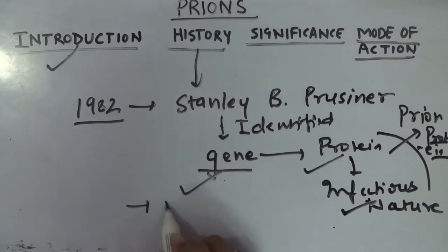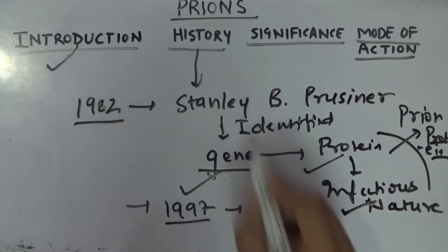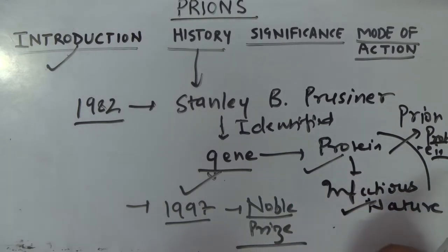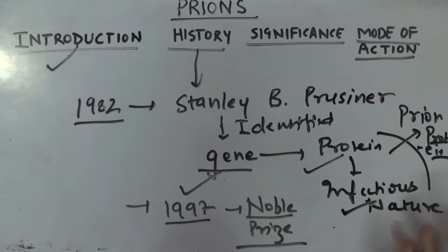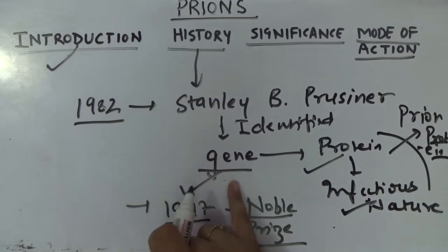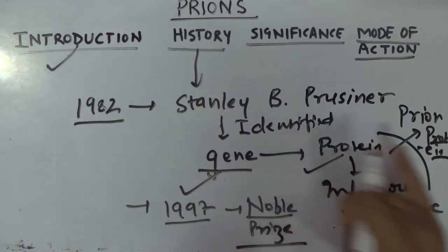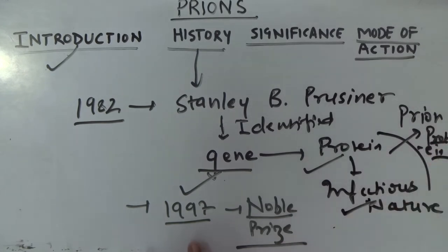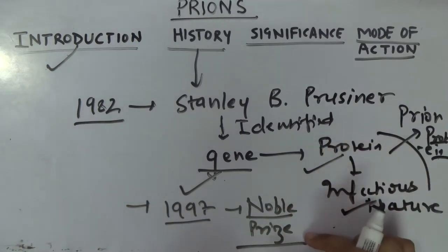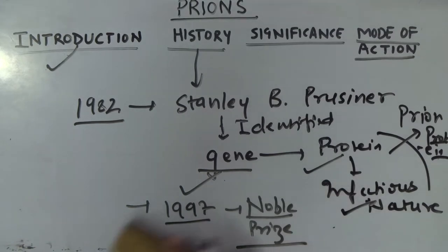In 1997, the same researcher — Stanley B. Prusiner — was awarded the Nobel Prize for his very important discovery of prion proteins. So to summarize the history: in 1982 Prusiner identified the gene coding for the infectious protein known as the prion protein, and in 1997 he was awarded the Nobel Prize for his major contribution on prions.